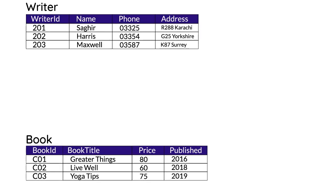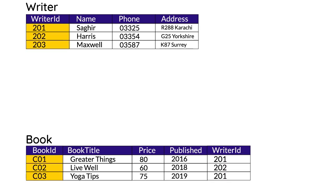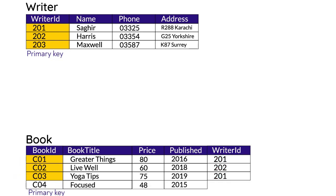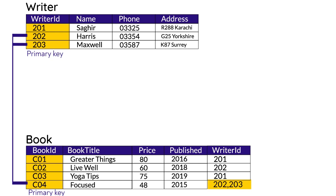For many-to-many relationships, we use the example of writer and book. A writer can write many books and one book can be written by many writers — both ends are 'many.' We have a writer table with primary key writer ID and a book table with primary key book ID. It cannot be linked with a foreign key because that would only consider one side as many. Adding values separated by commas is a violation of the first normal form, which is also a big no-no in databases.